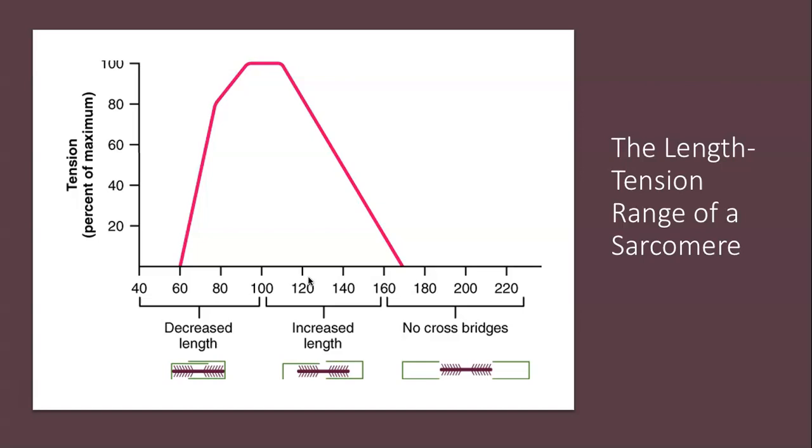100 percent is the state where the most tension occurs. That length maximizes the overlap of actin binding sites and the myosin heads.